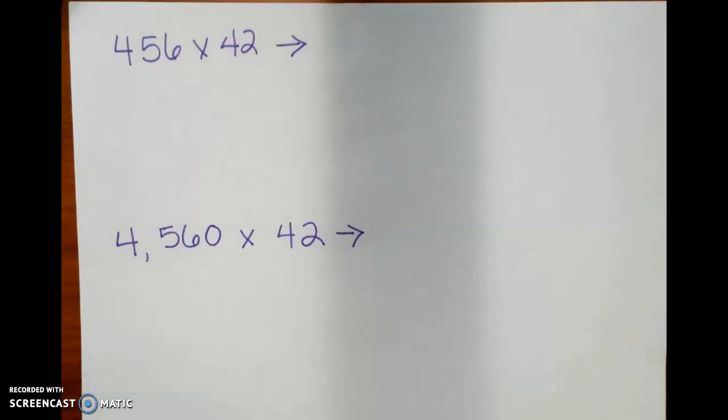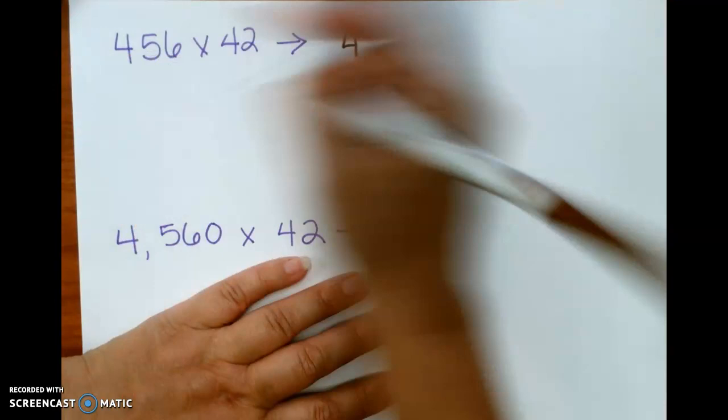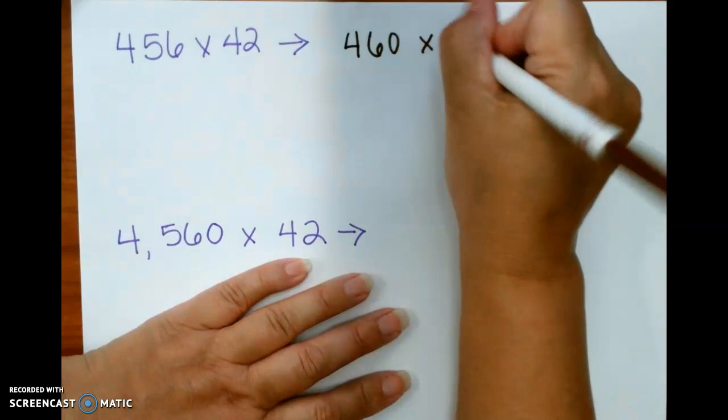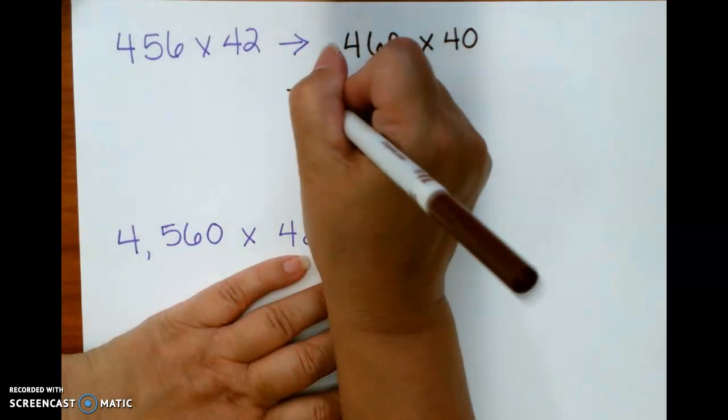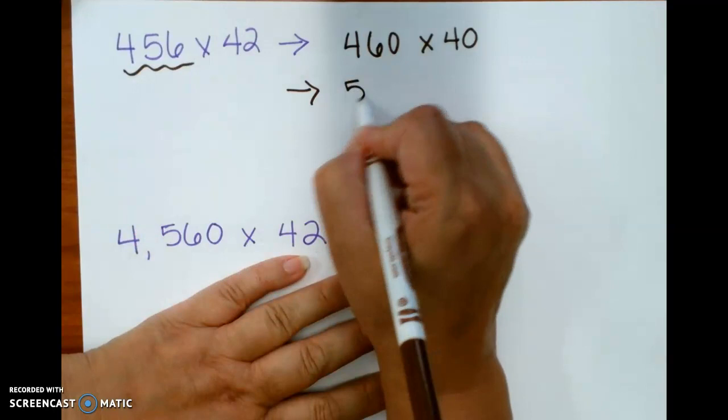So if I have 456 times 42 and I don't need to know the exact answer, I could round 456 to 460 and 42 to 40. But that's still kind of hard to multiply. So I could also round 456 to 500 and then multiply it times 40.